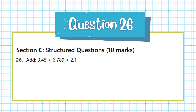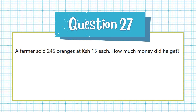Question 26. Add 3.45 + 6.789 + 2.1. Question 27. A farmer sold 245 oranges at 15 Kenyan shillings each. How much money did he get?